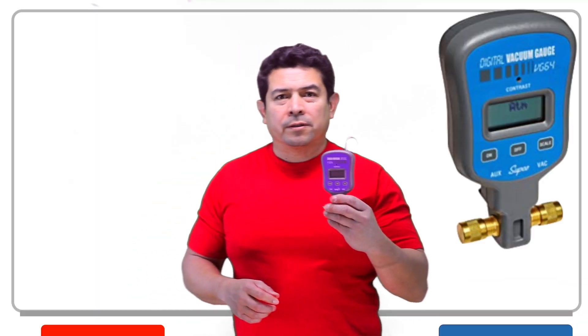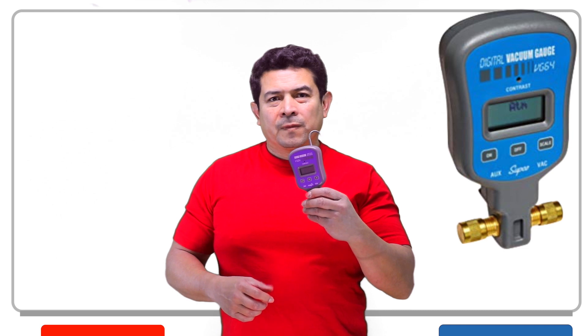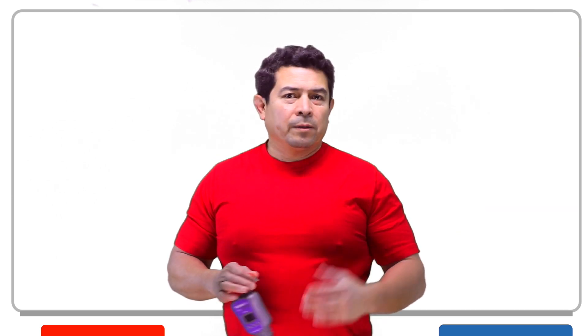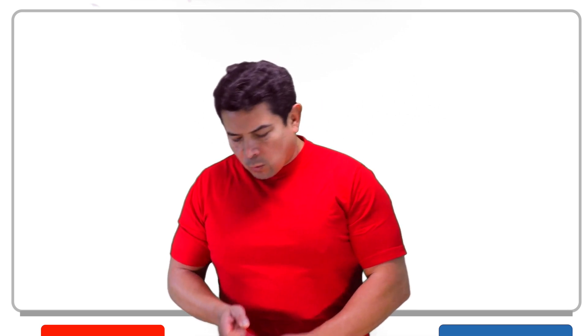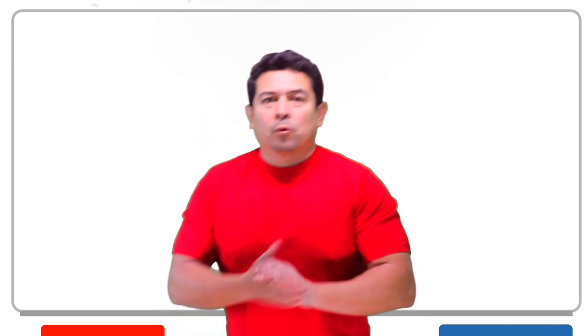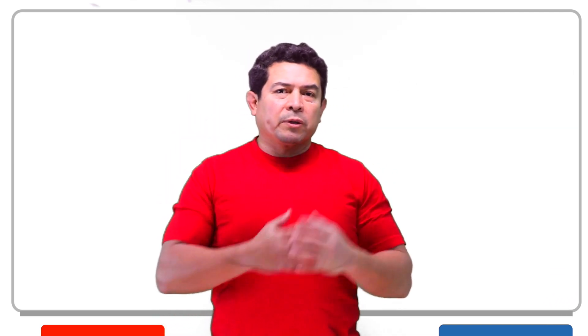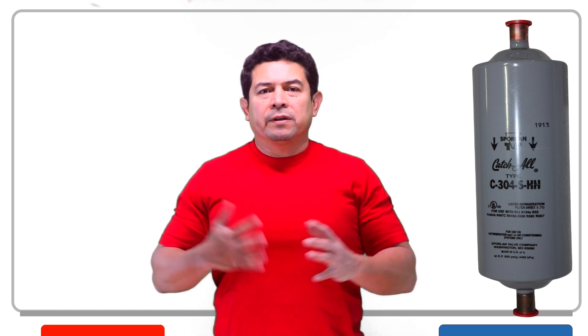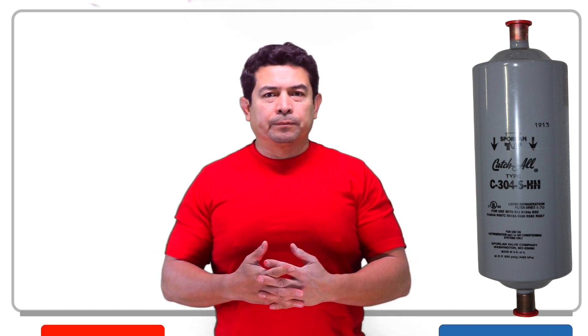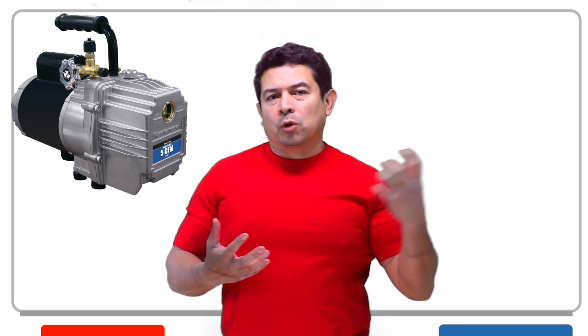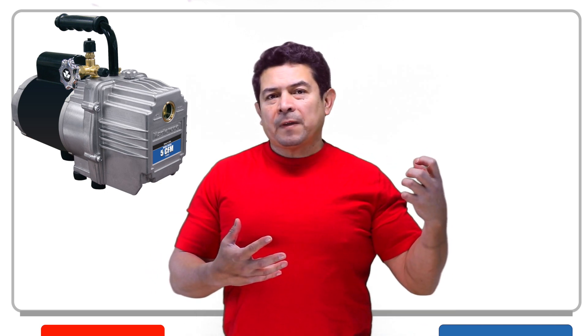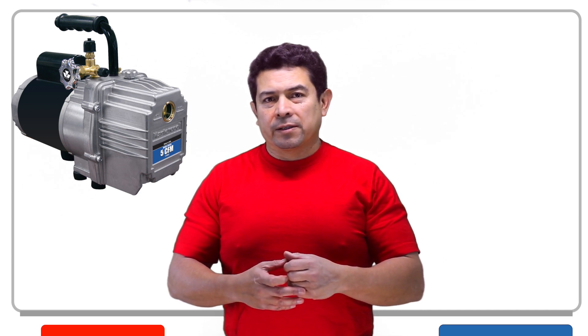I wanted to talk about your micron gauge. We know that we're supposed to pull a vacuum down to 500 microns when we have opened up a system. We're also supposed to replace the dryers, put a new dryer in every time you open up a system, and we need to pull a vacuum so that we can recover all of the air and non-condensables that's in the system.